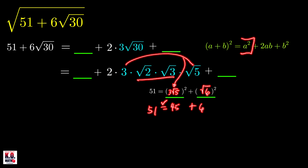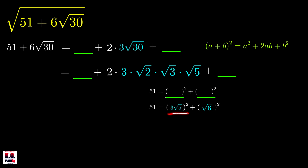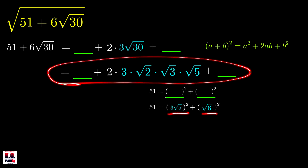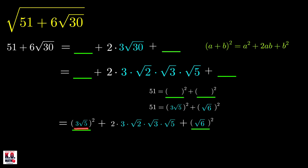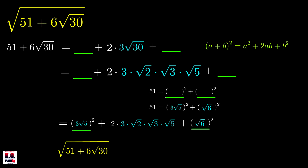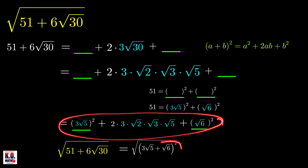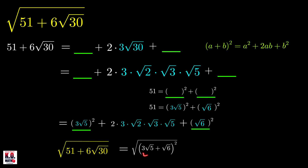We've found the correct values of a² and b². We can write 51 as (3√5)² + (√6)², so the expression becomes the square of 3√5 plus √6. Therefore the double square root simplifies to the square root of (3√5 + √6)². Since this is clearly a positive number, the square root of this quantity squared is simply 3√5 + √6.